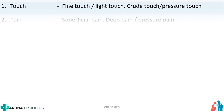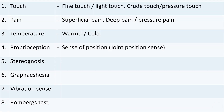These are the list of different sensations that we have to examine: touch, pain, temperature, proprioception, stereognosis, graphesthesia, vibration, and rombus. When you learn about these sensations, you should also know about the pathways and what the cortical sensations are, which I will be mentioning in this video.